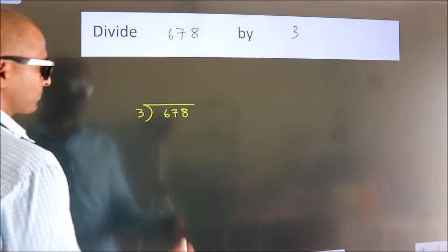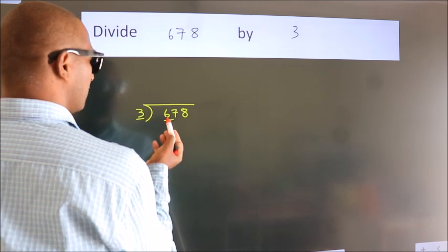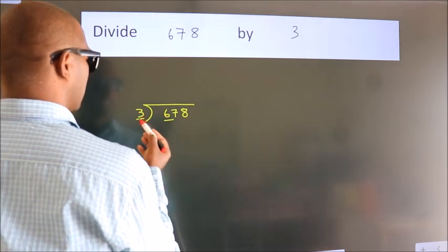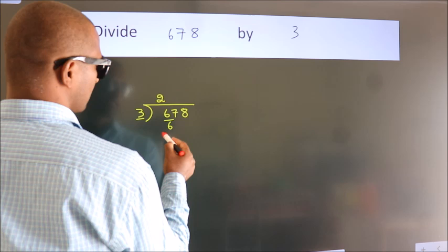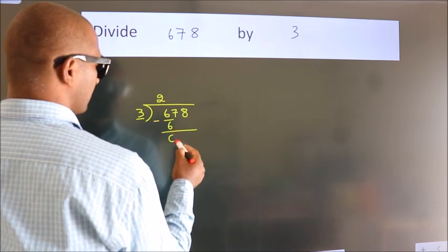Next, here we have 6, here 3. When do we get 6? In the 3 table, 3 times 2 is 6. Now, we should subtract. We get 0.